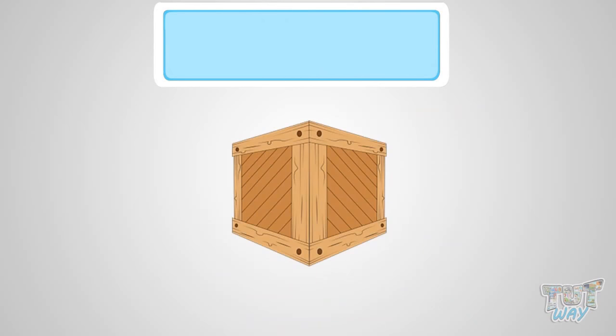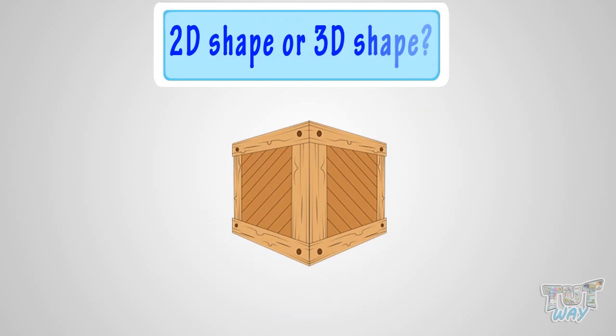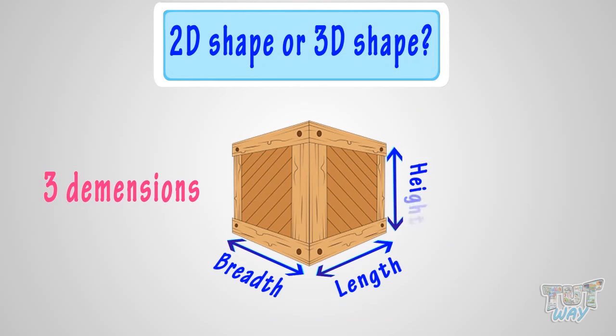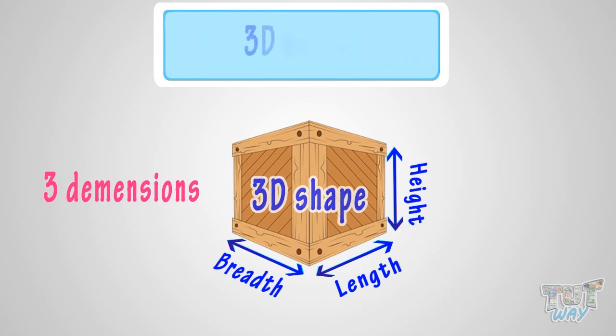Here we have a picture. Is it a 2D shape or a 3D shape? This shape has length, breadth, and height too. So it's a 3D shape.